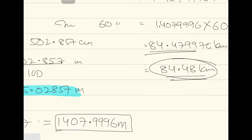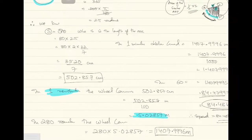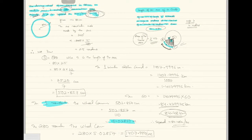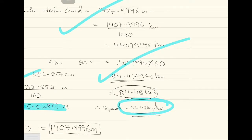So in one hour it covers 84.48 kilometers. That is the speed — distance covered in one hour means kilometers per hour. Therefore, speed equals 84.48 kilometers per hour. To summarize: I calculated the arc length per revolution using s = rθ, then multiplied by 280 revolutions per minute, then by 60 minutes, and converted to kilometers.